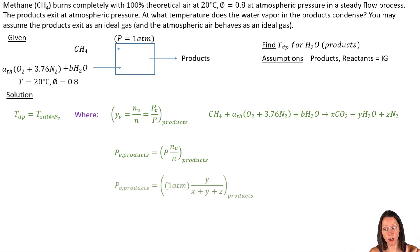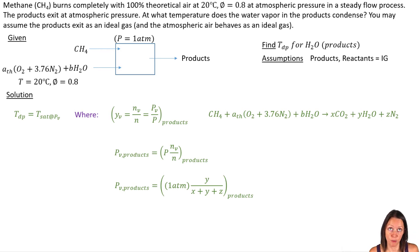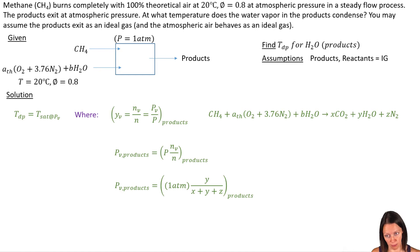When I plug in those coefficients, the partial pressure of my water vapor in the products equals 1 atm, or 1.01325 bar. My mole fraction is just Y — the number of moles of H2O — over the total number of moles, X plus Y plus Z. That's all talking about the ideal gas mixture of my products.